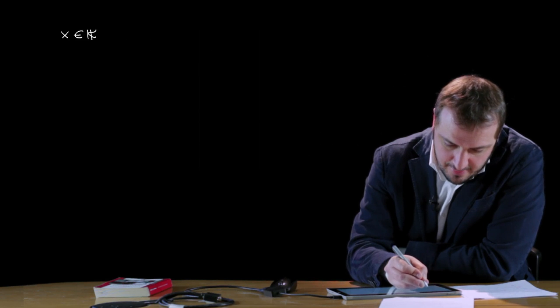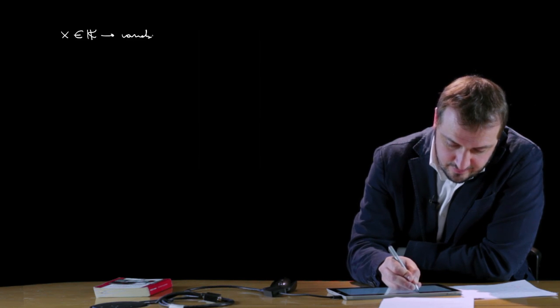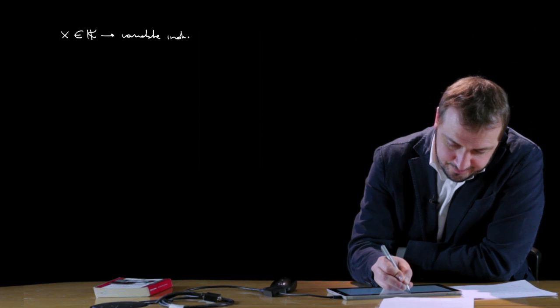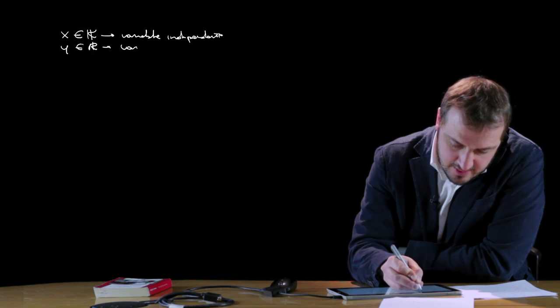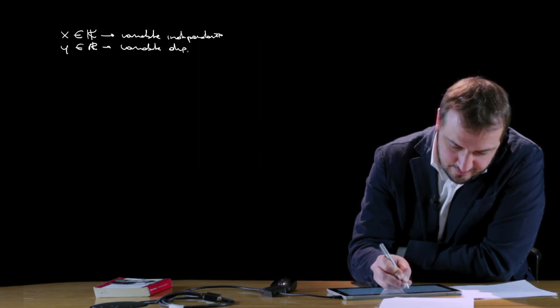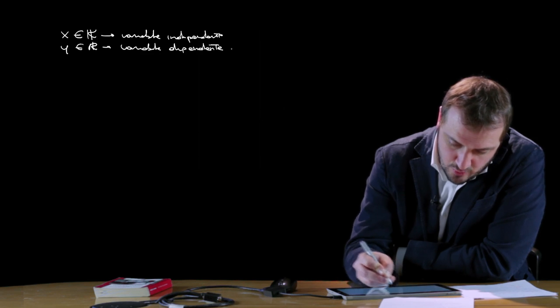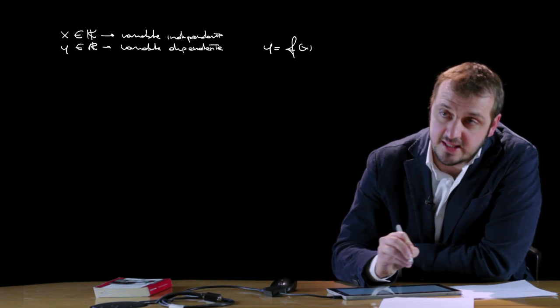Andiamo adesso a vedere un aspetto molto importante che caratterizza la maggior parte delle funzioni: le funzioni reali di variabile reale. Parliamo di funzione reale di variabile reale quando sia il dominio che il codominio dell'applicazione o della funzione sono sottoinsieme, propri o impropri, dell'insieme R dei numeri reali. In questo caso, x appartiene a R e si chiama variabile indipendente, mentre y appartiene anch'essa ad R e si chiamerà variabile dipendente.